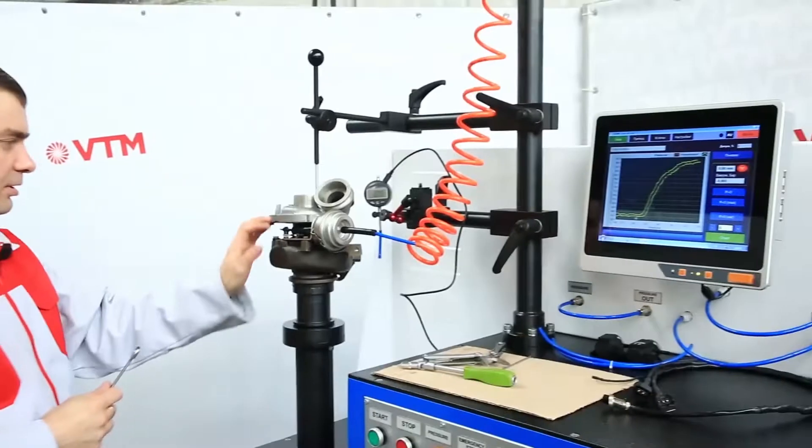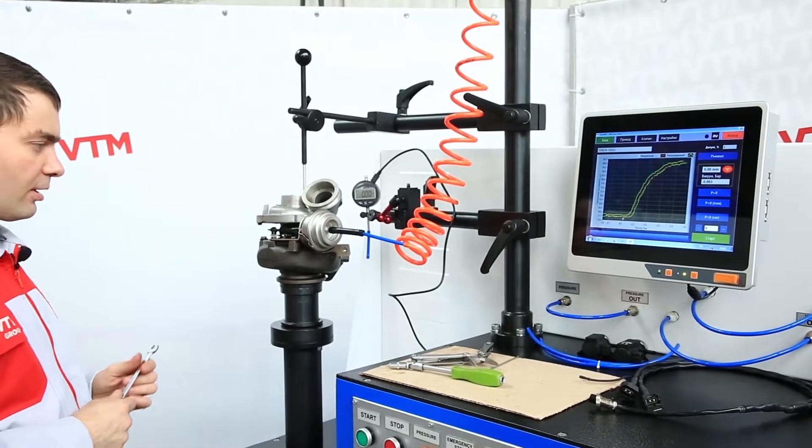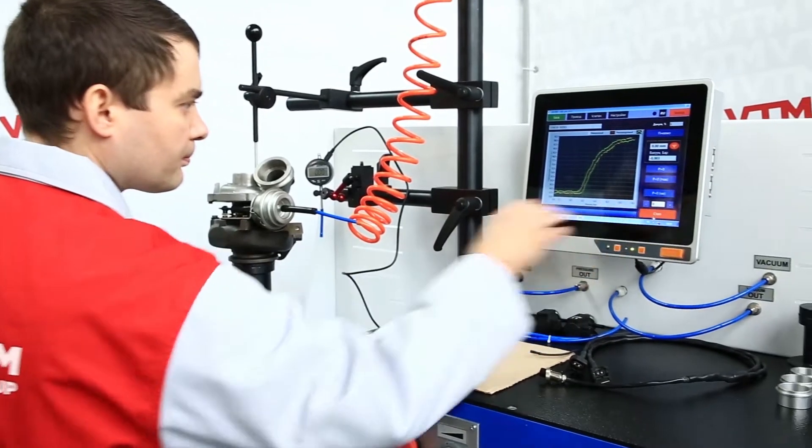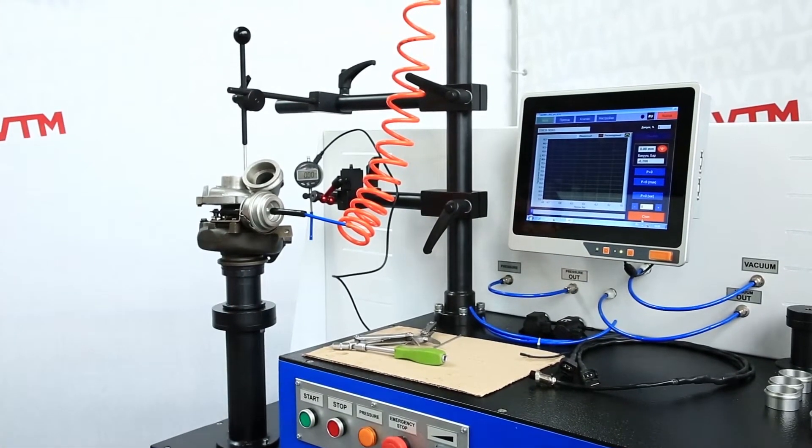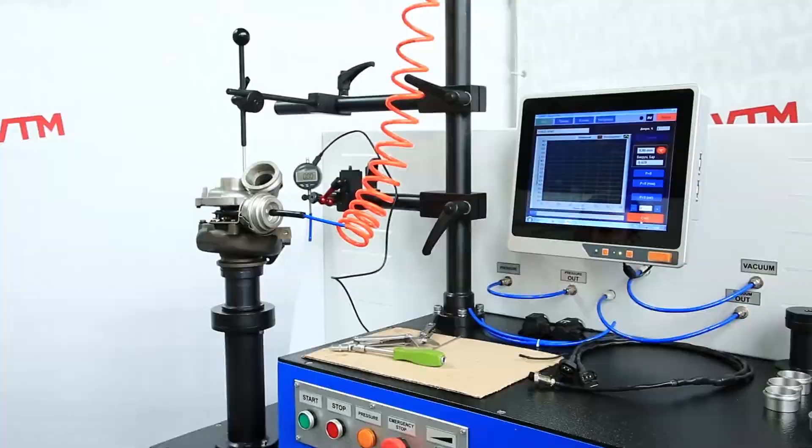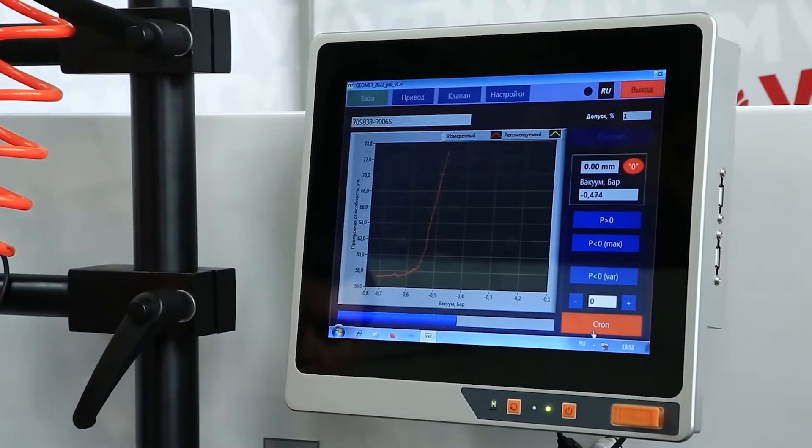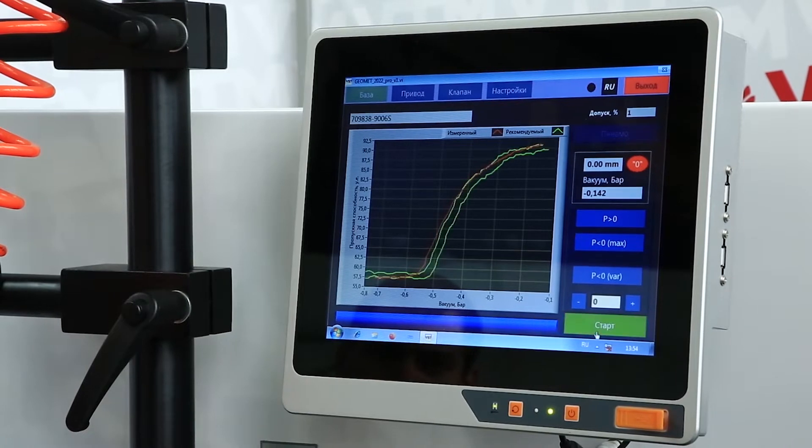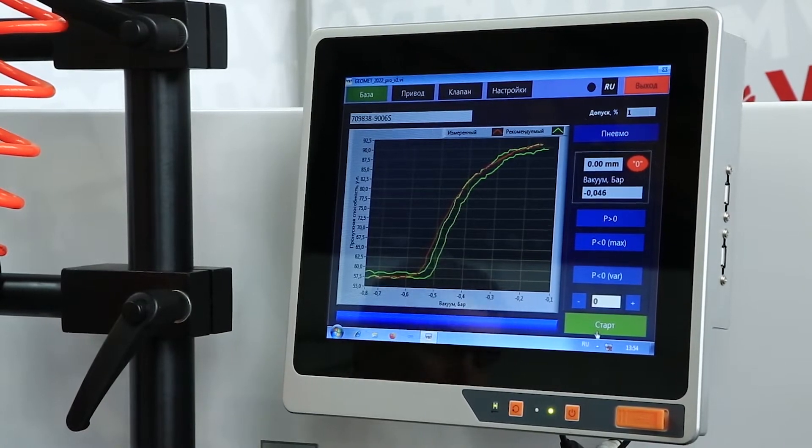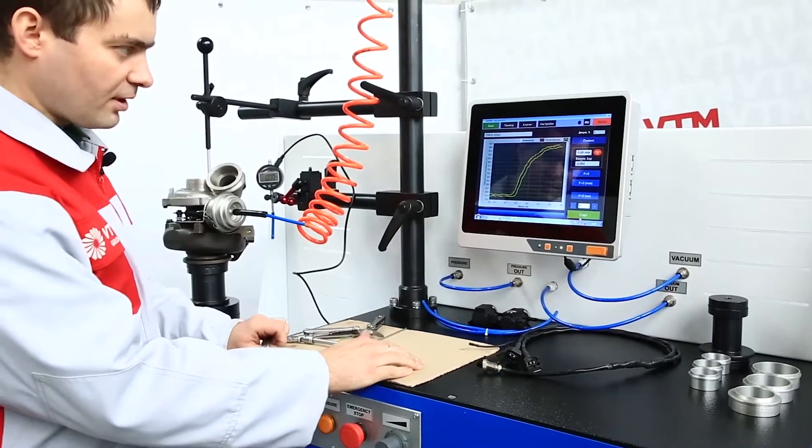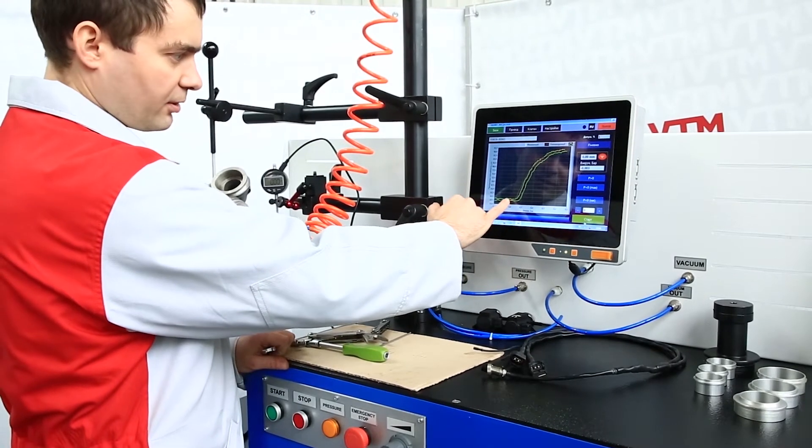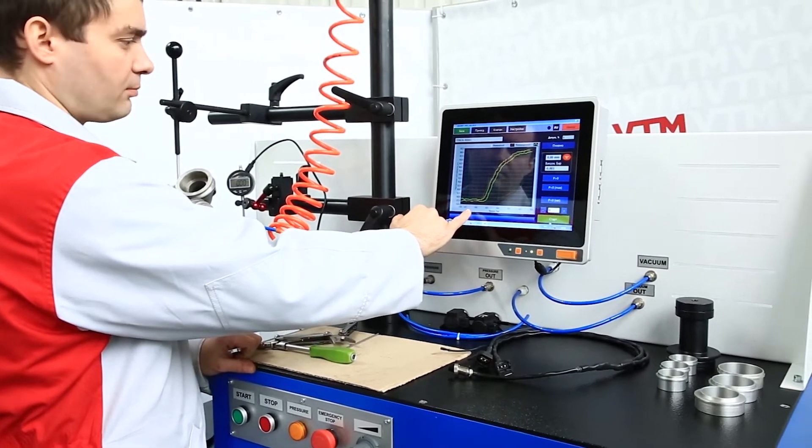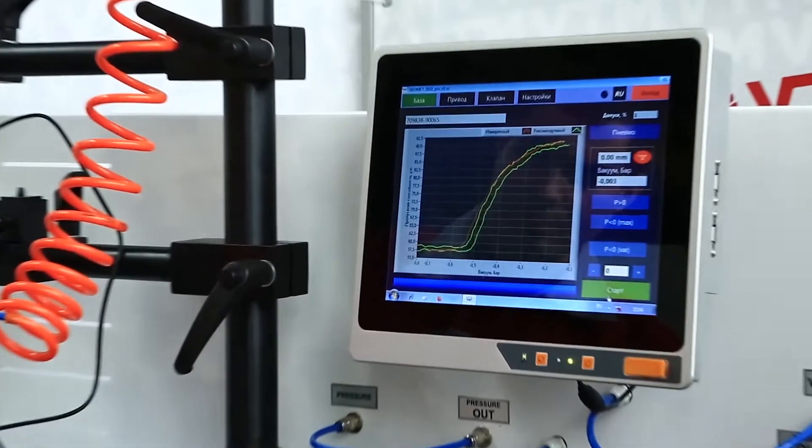Now we have upset the rod. Let's see what we get on the diagram. The offset of the opening moment, the beginning of the opening of the geometry, shifted closer to minus 0.6 bars.